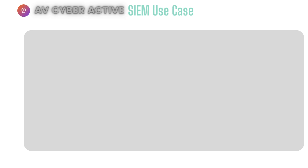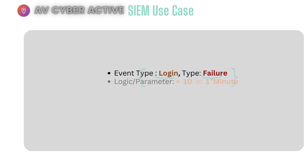Coming back to the SIEM use case, let's try to understand this visually with an example. You get an event that is normalized as 'login' and a subtype or type which carries 'failure.' This is where your parsers come into picture, where you categorize the event as login and the type as failure. For the logic, you would want to trigger this rule when 10 failure events are observed within a minute.